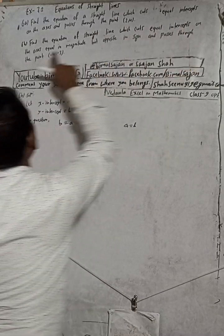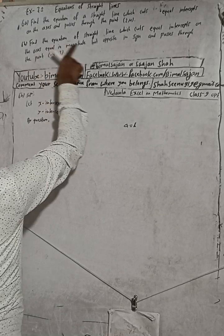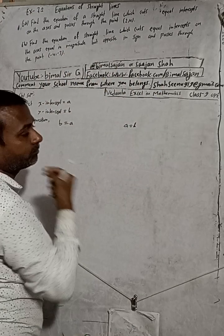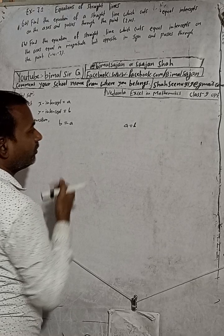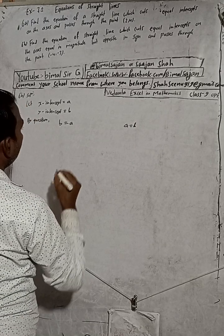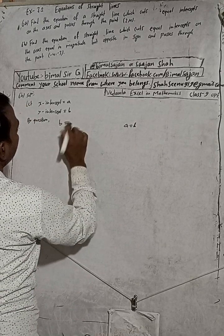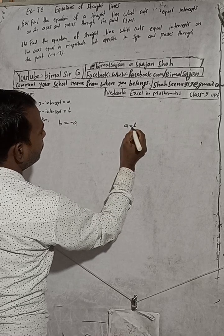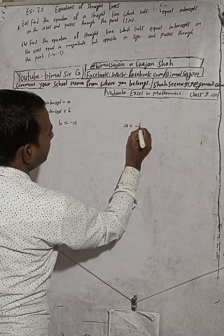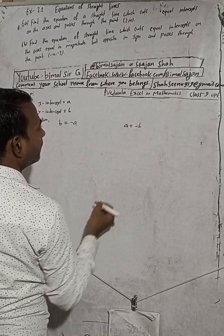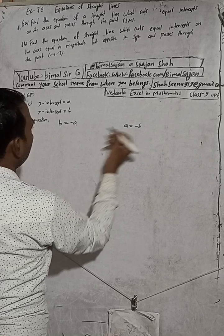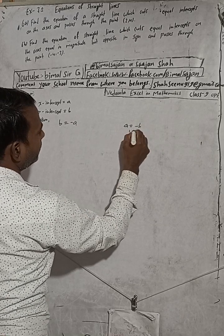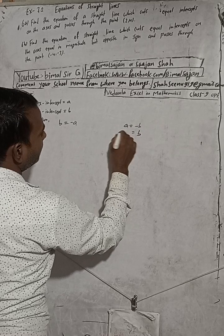The question says equal intercepts on the axis, equal in magnitude, but opposite in sign. That means we can write B = -A, or equivalently A = -B. In both cases we get B = -A.